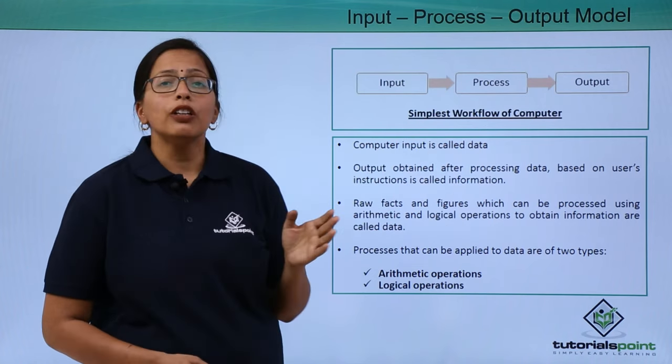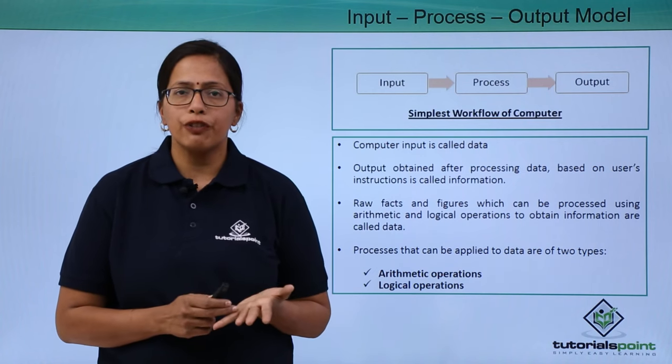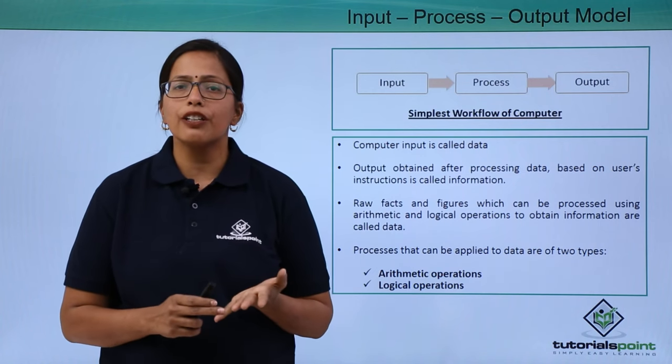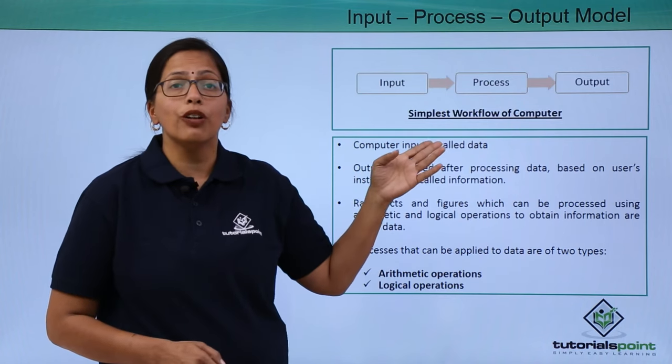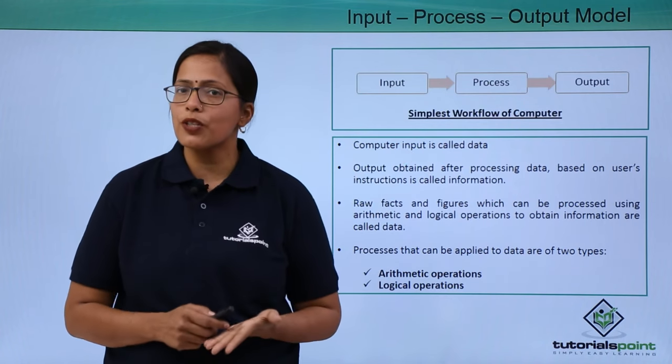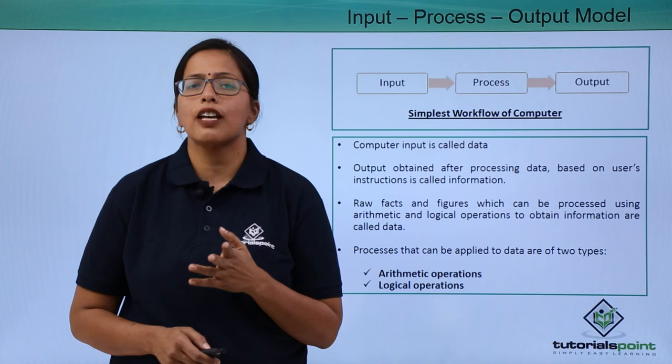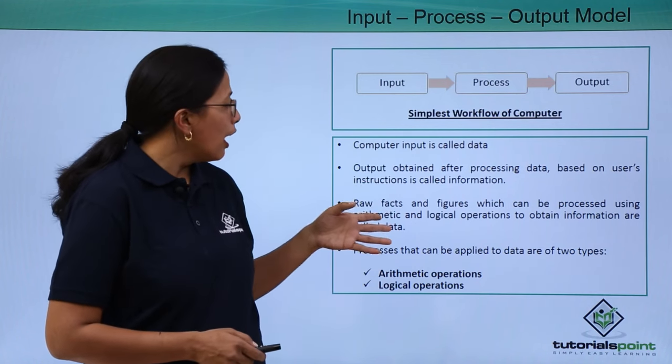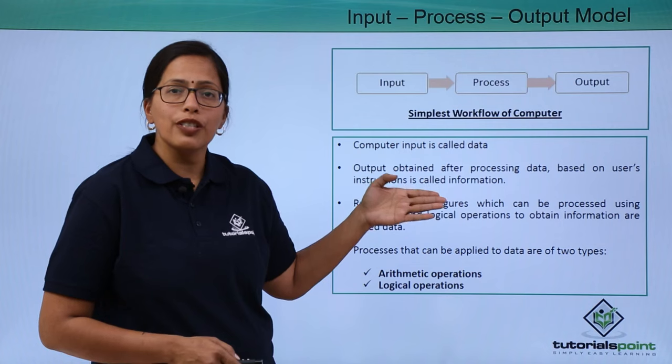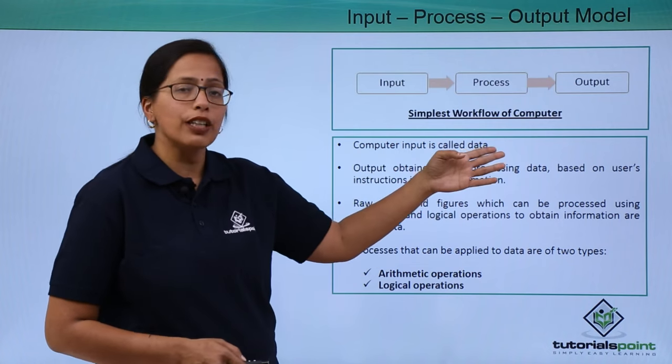Computer input is called data. Any raw information, raw facts, figures are called data. This data is processed upon by the computer. How is this processing done? This processing is done as per the instruction given by the user and depending on the process that is applied, an output is given.